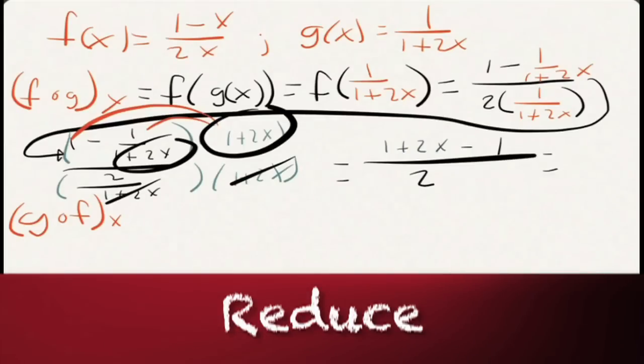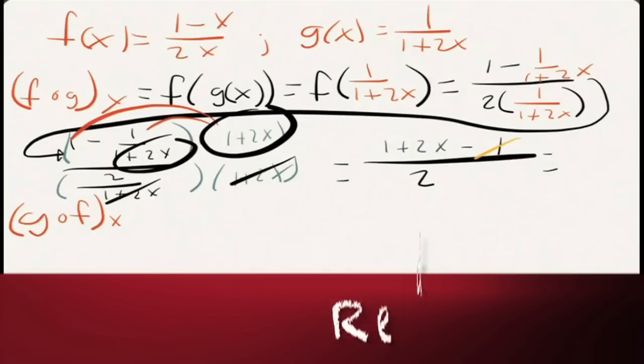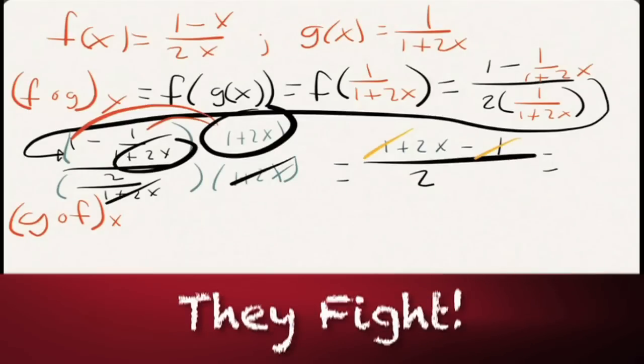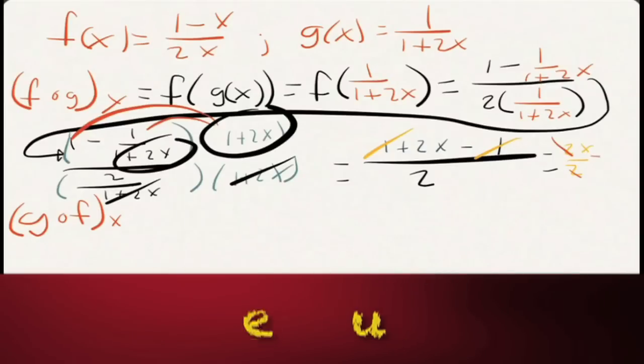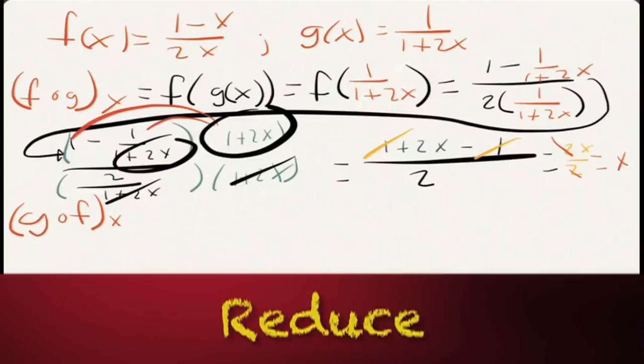So you clean that up. And when you do, the 1's cancel. And you have a 2x over 2. Those also reduce. And you're left with x. Yeah.